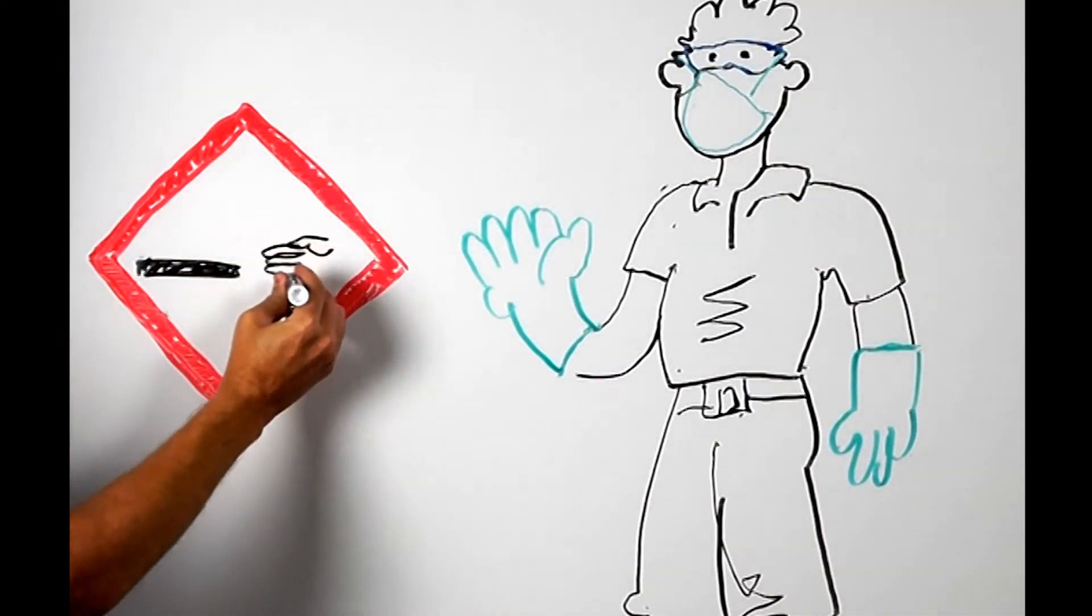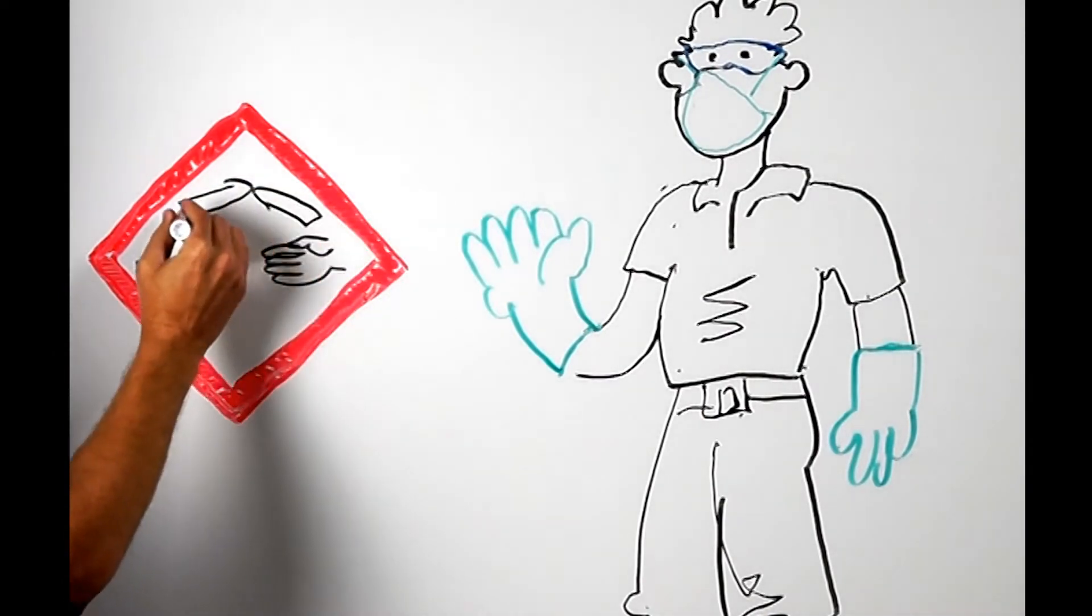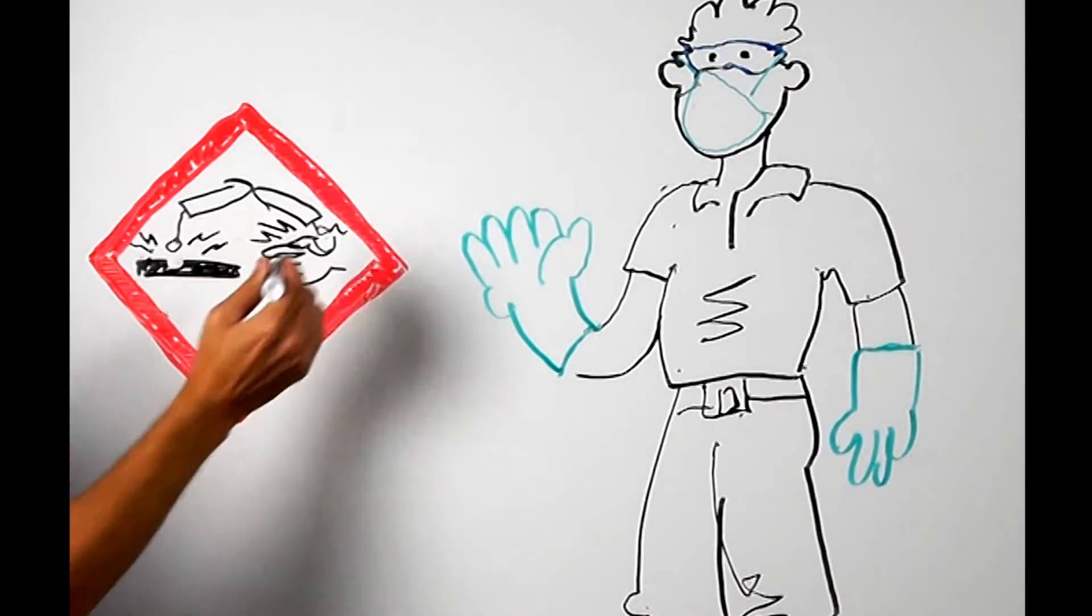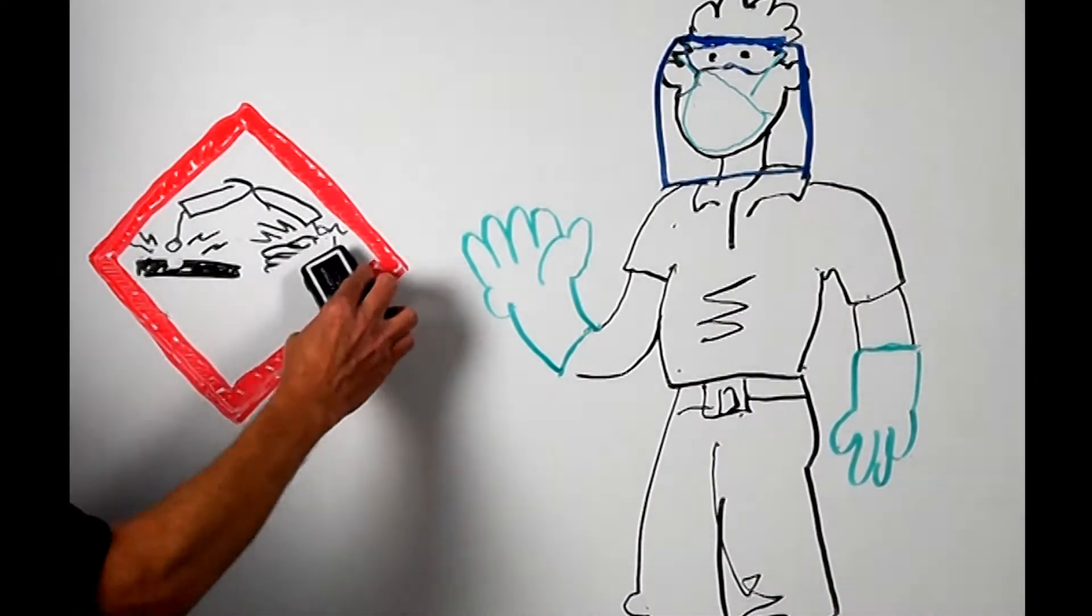The corrosion symbol says it all. It will cause skin and eye damage, so make sure to wear gloves and eye protection, maybe even a face shield if the chemicals are splashing around.